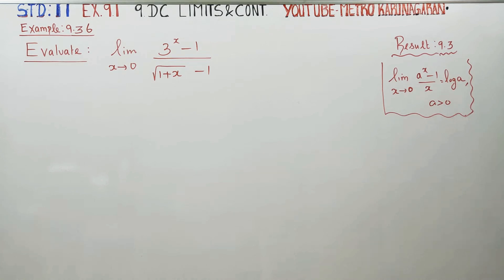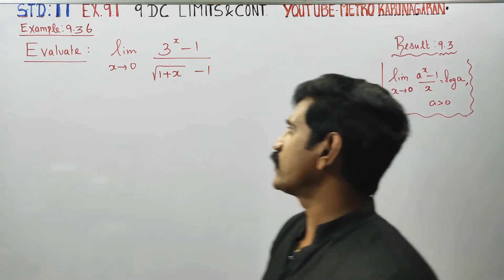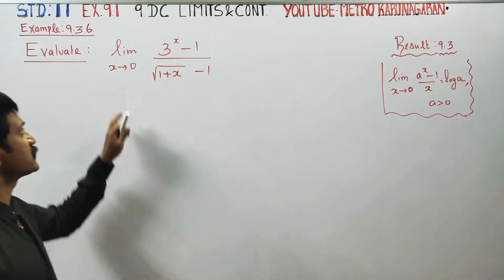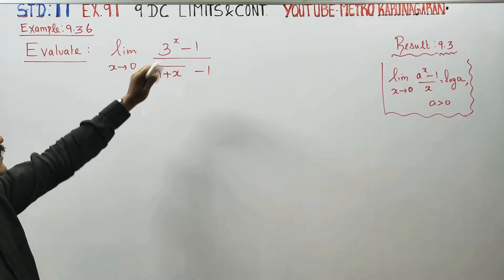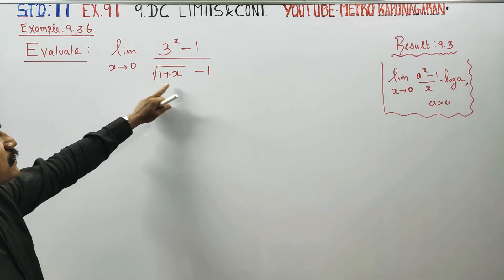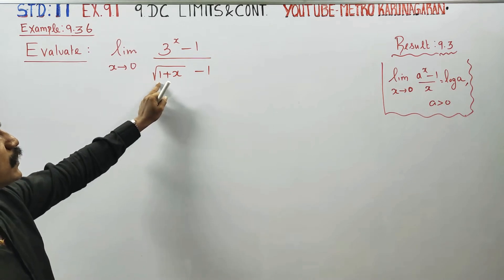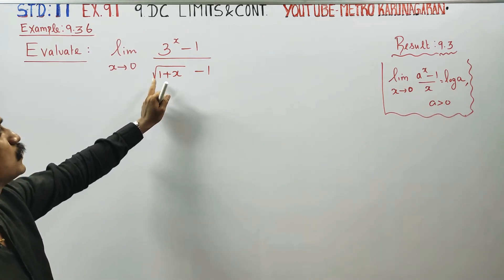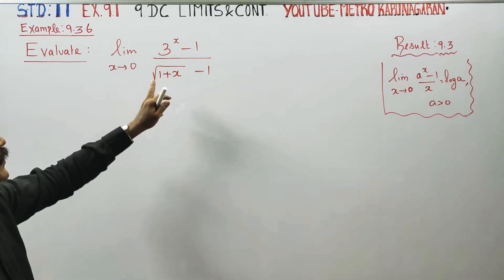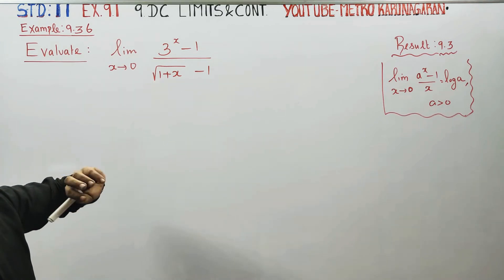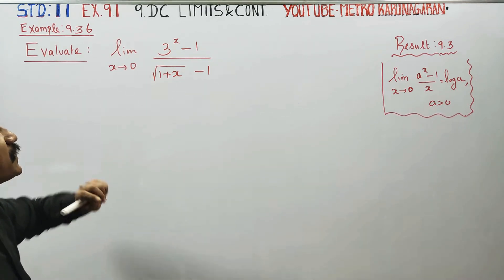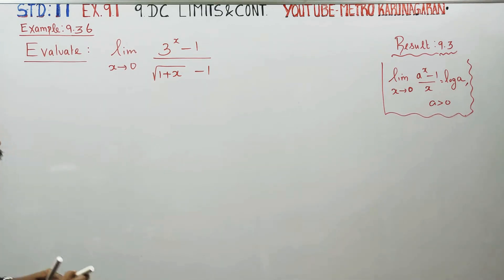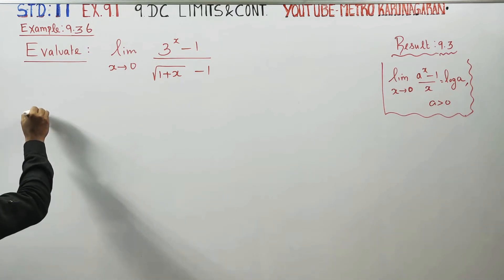Dear 11th standard students, in example 9.36 you have to evaluate limit x approaches 0 of this function. If you put 0, you can put 1 plus 0 under root giving 1, and 1 minus 1 is 0. So you get 0 in the denominator, meaning the 0/0 indeterminate form, and we need to apply a method to the denominator.